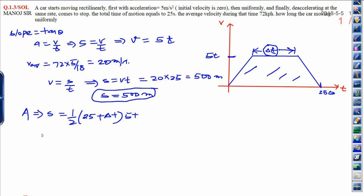Sum of parallel sides means 25 plus delta t, times perpendicular distance that is 5t. Now, put the value. You know distance is 500 equals half into 25 plus delta t. Delta t can be calculated as 25 minus 2t. This equals minus 2t squared.